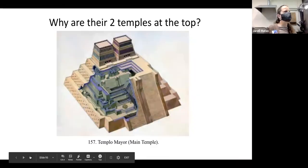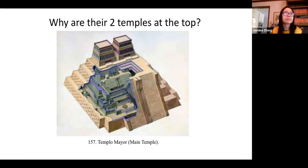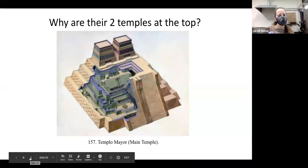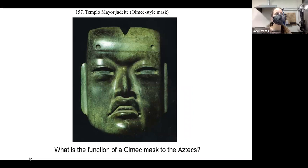Why are there two temples at the top of Temple Mayor? They worship two different gods, but remember they're tied together. We can't have regeneration — that's Tlaloc, the water god — without destruction. So the Huitzilopochtli side with fire and warfare: you have to have things that end to bring back the prosperity. These are two unified ideas of creation and destruction — that is how the Aztecs gained their power.